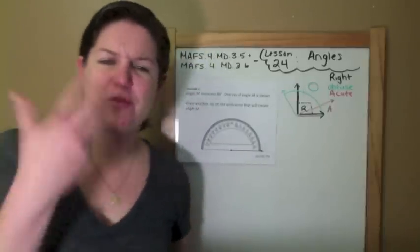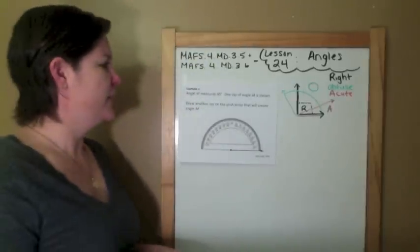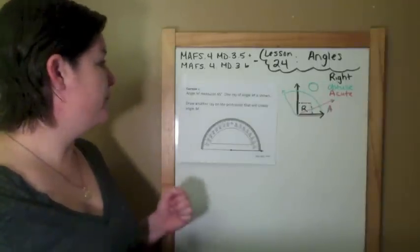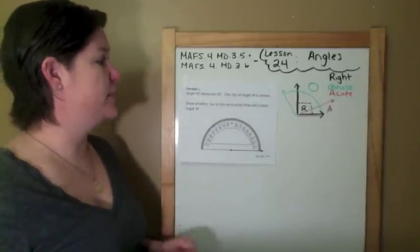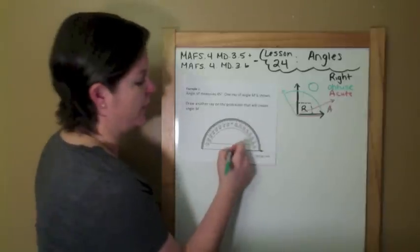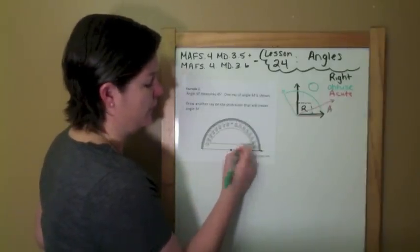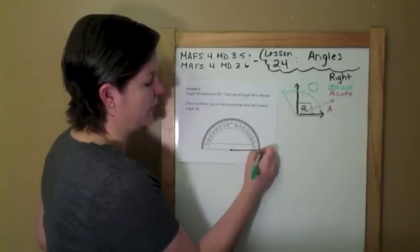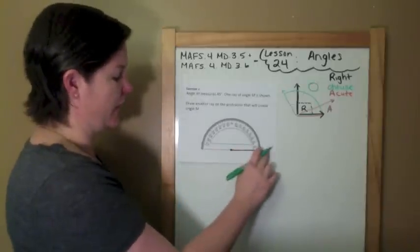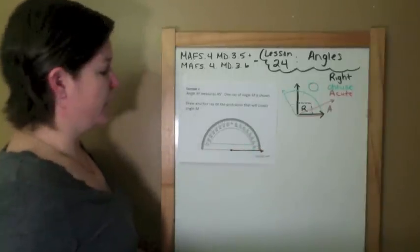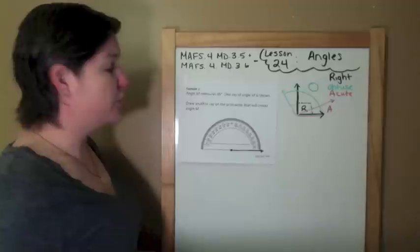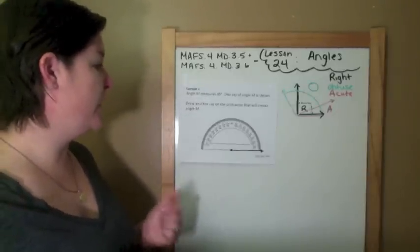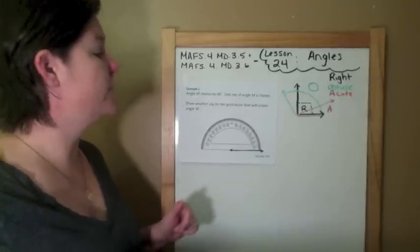An angle, and excuse me for all the sniffles. Got the sniffles today. Angle M, angle M measures 45 degrees. One ray of angle M is shown. So we've got our point right here, and one of the rays is going directly at the zero line. Draw another ray on the protractor that will create angle M. So we need to find where 45 degrees is.